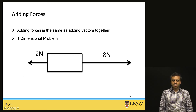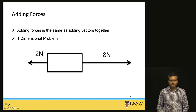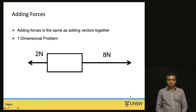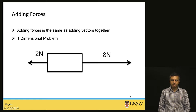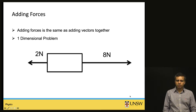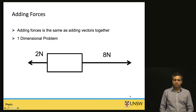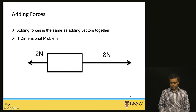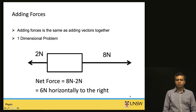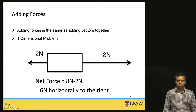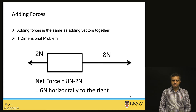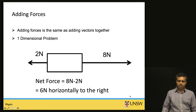Let us go through this example of adding forces in one dimension. There is a 2-Newton force pulling this object towards the left and an 8-Newton force pulling this object towards the right. So what is the net force? Using vector addition in one dimension, the net force is 8 minus 2 Newtons — 6 Newtons acting horizontally to the right.